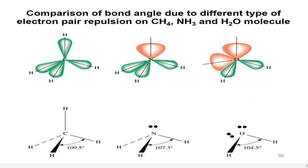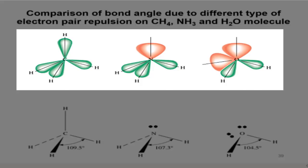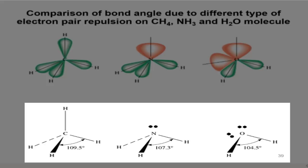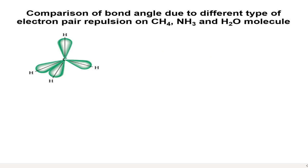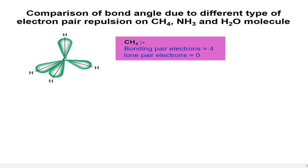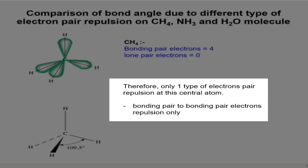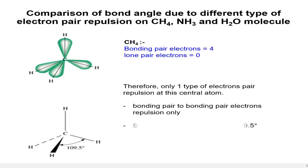These are the comparisons of bond angle due to different types of electron pair repulsions on CH4, NH3, and H2O molecules. These three molecules have different bond angles due to different types of electron repulsions existing in the molecule. Let's start with CH4.